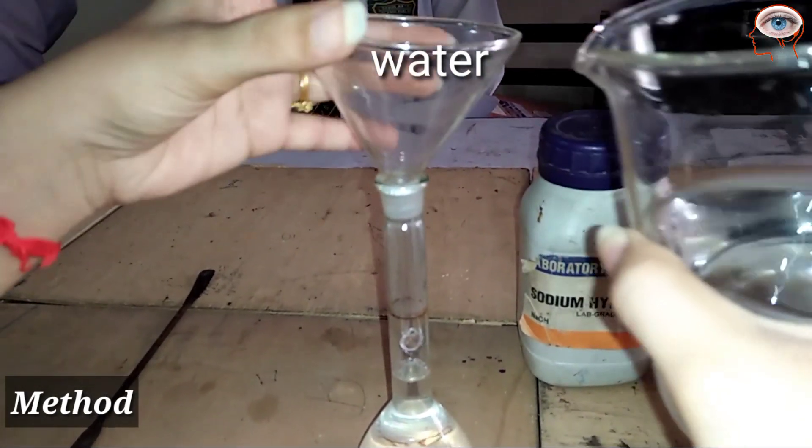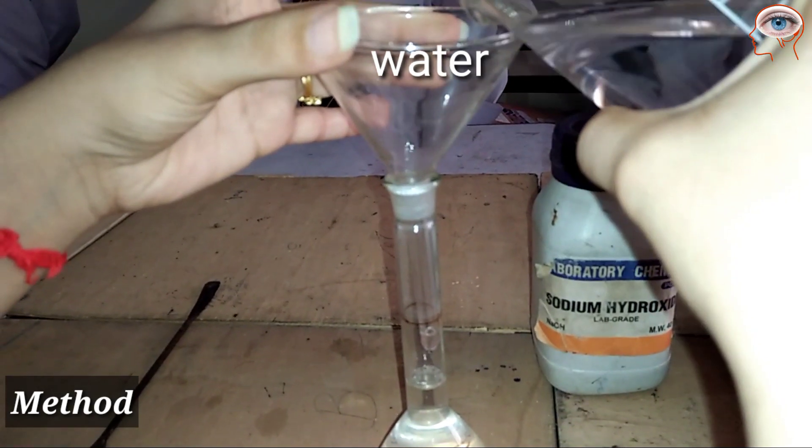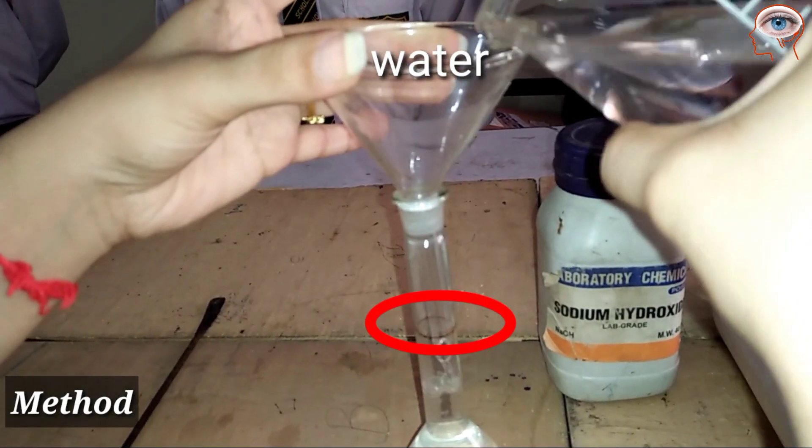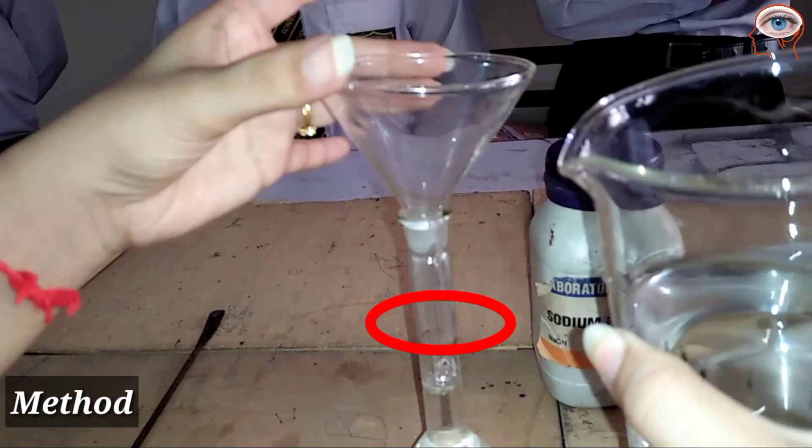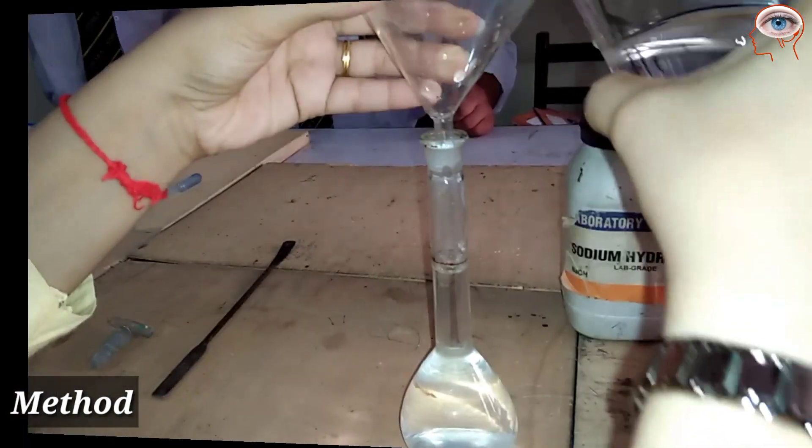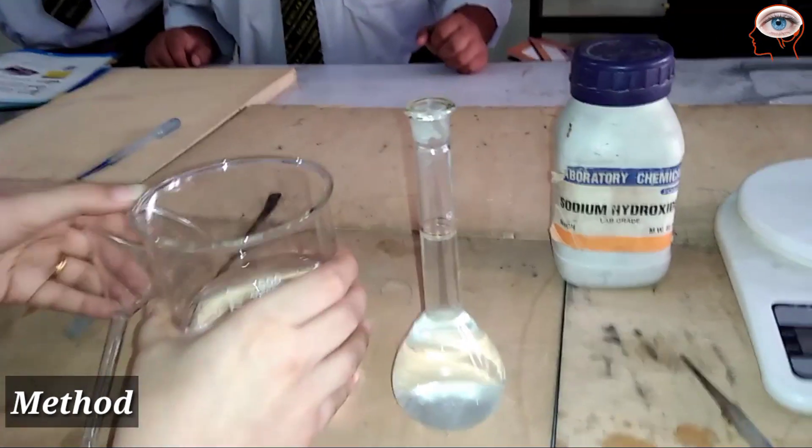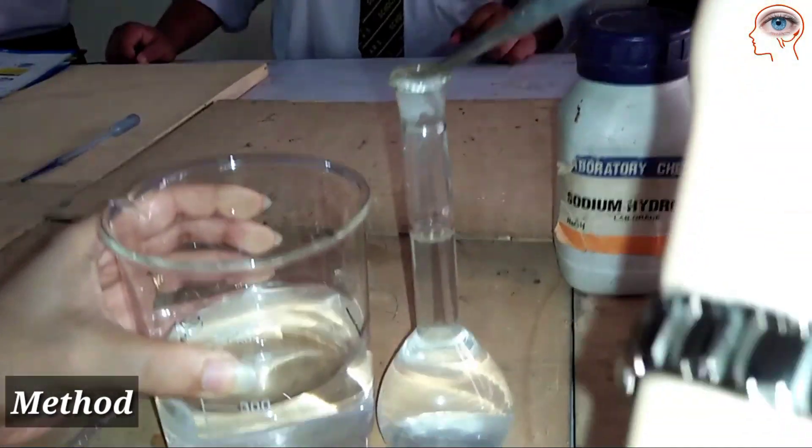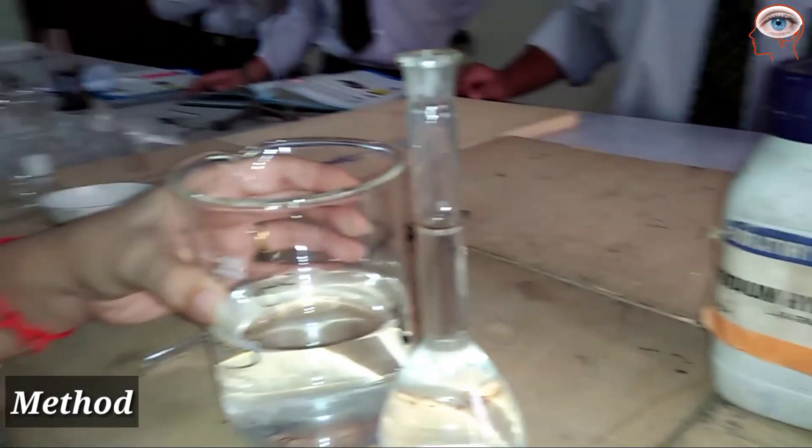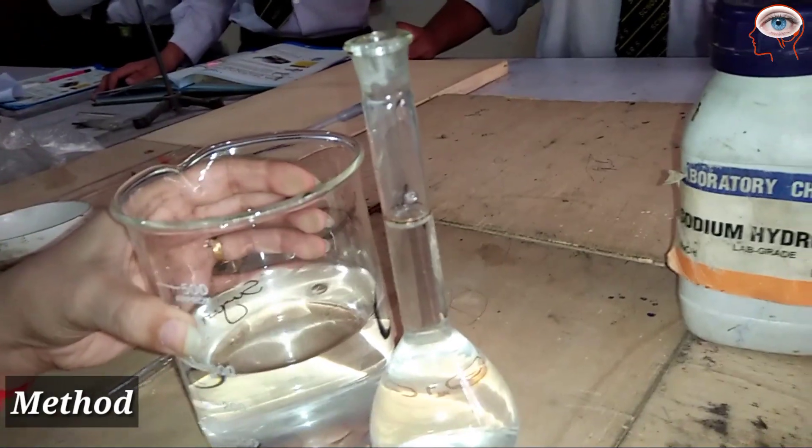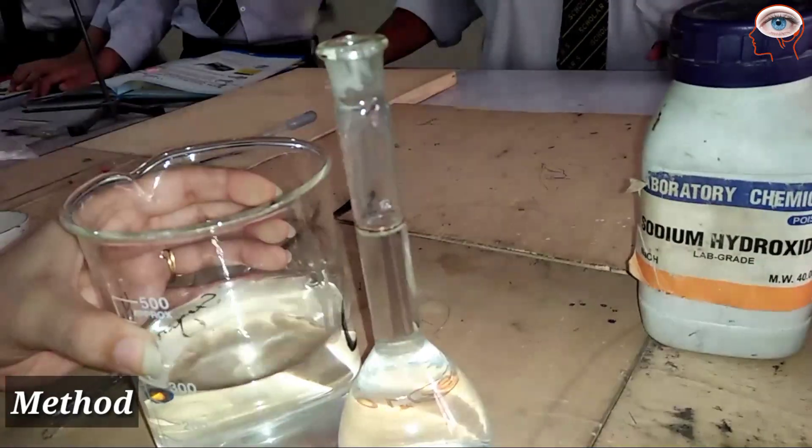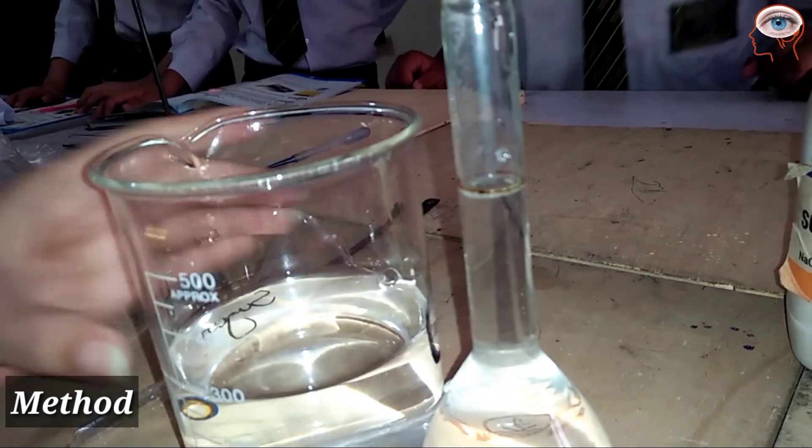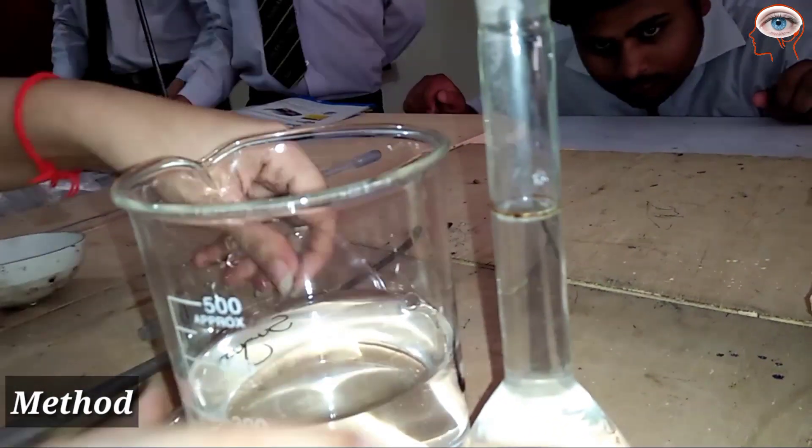Add water up to the mark at the neck of the flask. Use a dropper when close to the mark and add water drop by drop. The volume should not exceed the mark, otherwise the molarity of the solution will be disturbed.